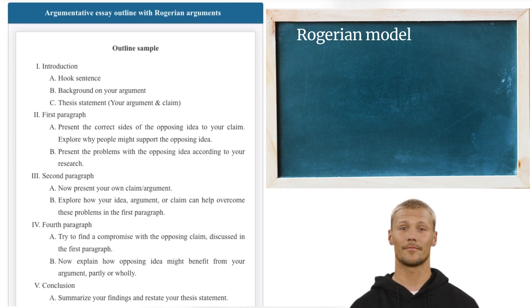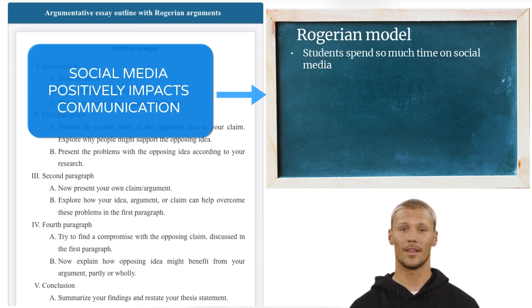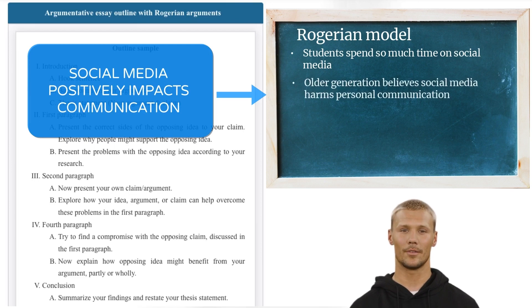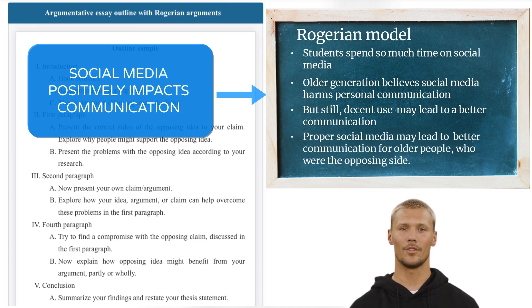Let me give you an example on this outline. Say you want to discuss that social media positively impacts communication using the Rogerian argument. In your essay, you first need to accept that students spend so much time on social media, which is generally the main opposing idea. Then you argue that the older generation believes social media harms personal communication. After that, you suggest that decent use of social media may actually lead to practical and rapid communication. And finally, you suggest that proper social media usage may even lead to better communication for older people who were skeptical at first. With the Rogerian Model, you find the middle ground but still propose your own argument in a mild, non-aggressive manner.